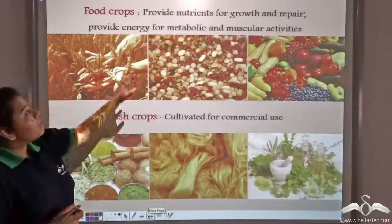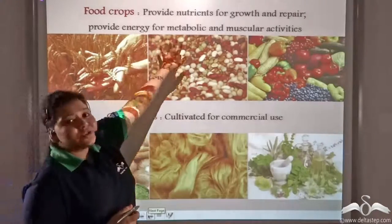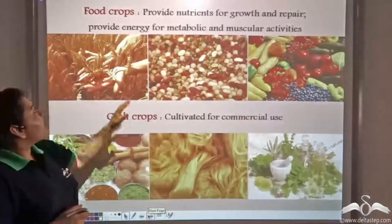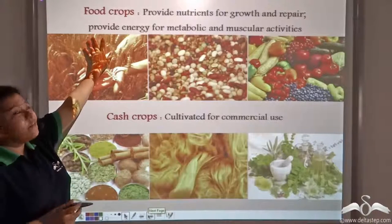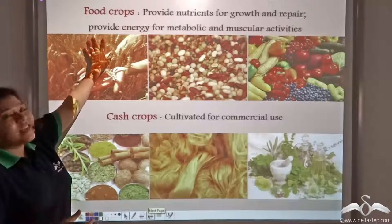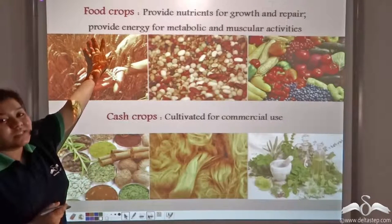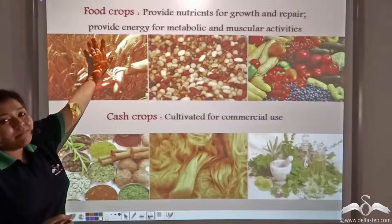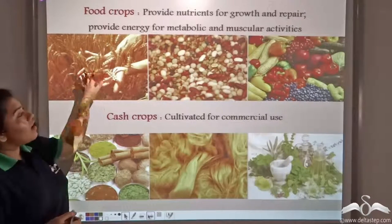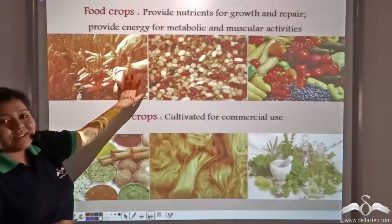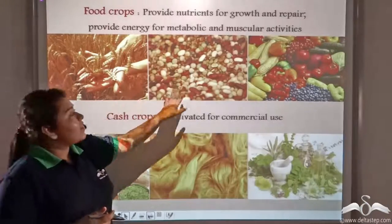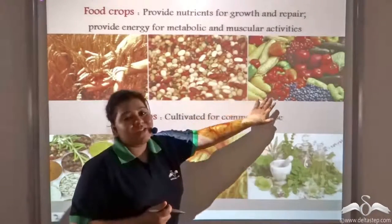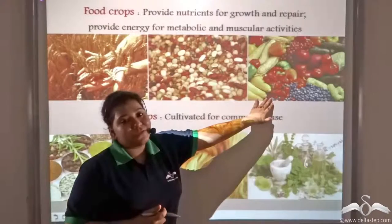Food crops provide nutrients for growth and repair, and provide energy for metabolic and muscular activities. A few examples of food crops are cereals like rice and wheat, legumes like pulses, and vegetables and fruits.